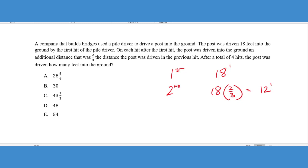It says after a total of four hits, the post was driven how many feet into the ground? So what I'm going to continue to do is figure out how much further the next hit put it into the ground. So I'm going to take that 12 feet from the second hit and get two thirds more distance, which would be eight feet. And then again, that fourth hit, I'm going to take that eight feet and see what two thirds of that would be. And that would be roughly five and a third feet.